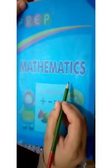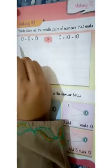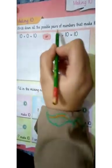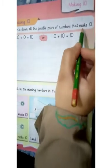Maths workbook class prep, page number 37, Making 10. Write down all the possible pairs of numbers that make 10.